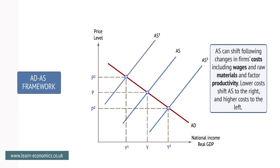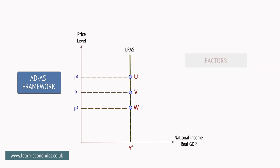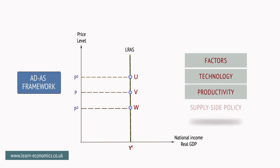The long-run aggregate supply curve, or LRAS curve, is a vertical curve at the economy's current capacity at YF. The position of the LRAS curve is not determined by the price level. In the long run, and assuming normal levels of inflation between 2% and 5%, the price level has little bearing on output, while the quantity and quality of factors — including labour, the use of technology, and the productivity of factors — do have an influence.